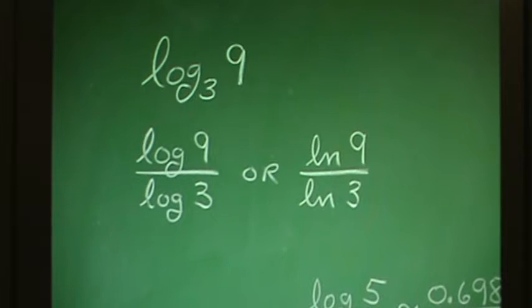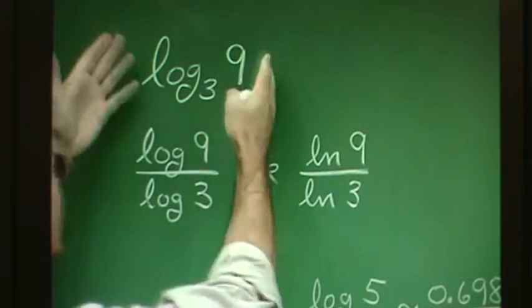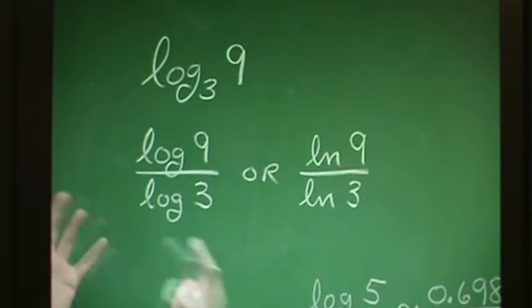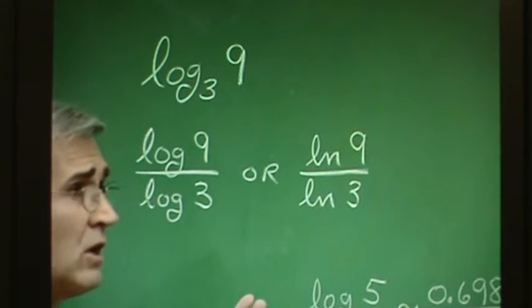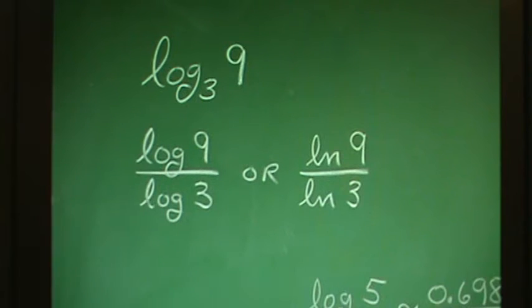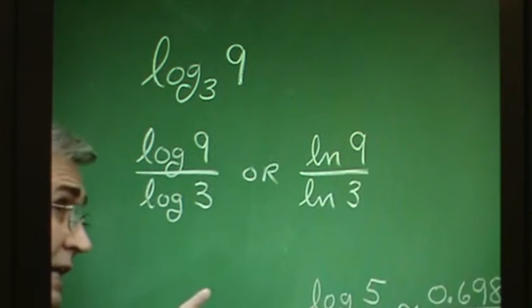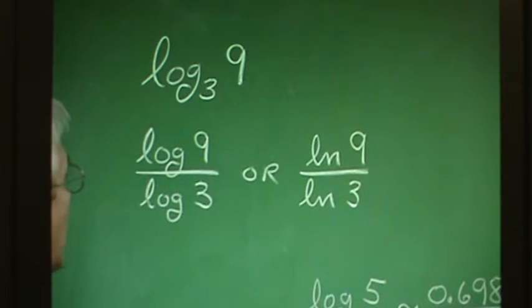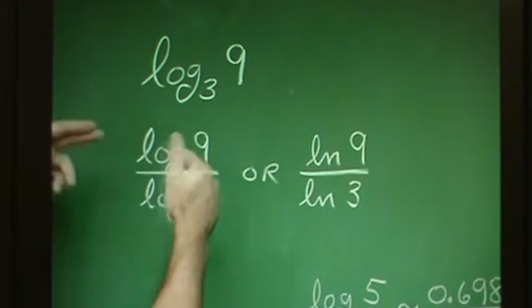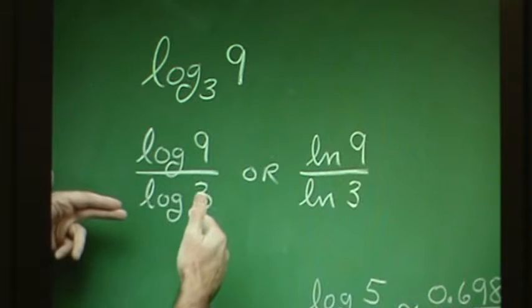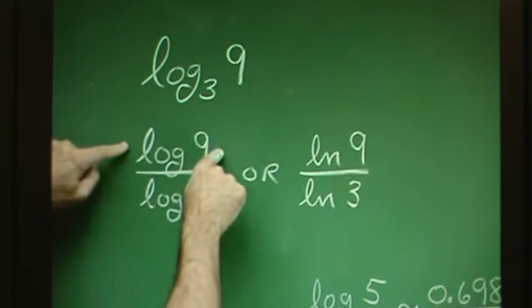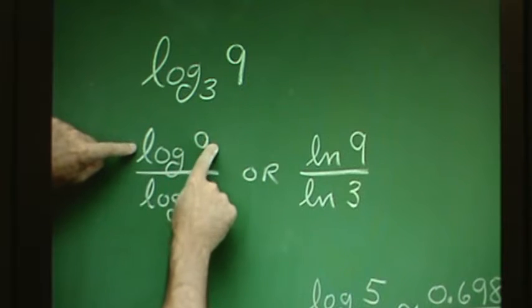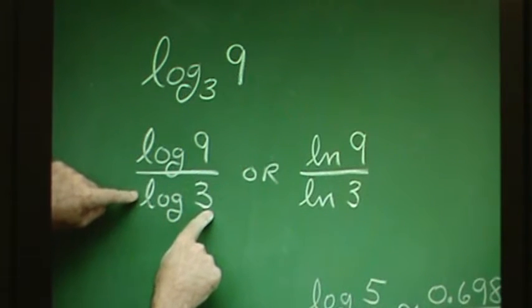It turns out that we can change to any base we want using this technique. We can change to base 10, base e, base 7, or whatever we'd like. But if we change to base 10 or e, then we can evaluate this expression in the calculator. It just involves making a fraction. I'm changing to base 10 here, with log base 10 of 9 in the numerator and log base 10 of 3 in the denominator.